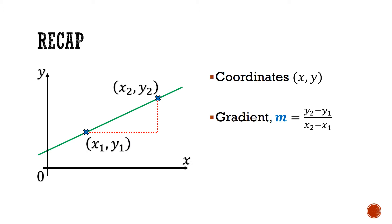Lastly, we have also learned to find the equation of a straight line, which is given by the formula y equals mx plus c, where m is the gradient and c is the y-intercept.